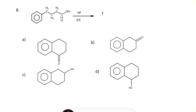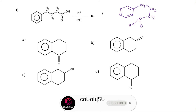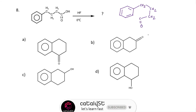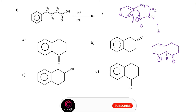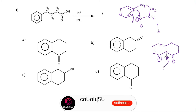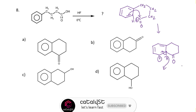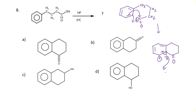This question is an example of intramolecular Friedel-Crafts acylation. In the first step, when the given compound is treated with HF, it forms an acetyl carbocation which acts as an electrophile and attacks the benzene ring, leading to the formation of an intermediate arenium ion. In order to regain aromaticity, a hydrogen is lost, leading to the formation of the final product. The correct answer is option A.